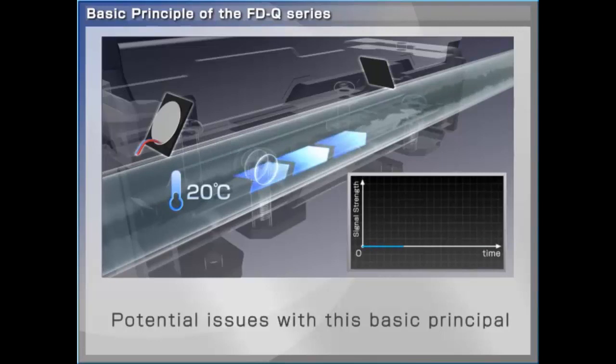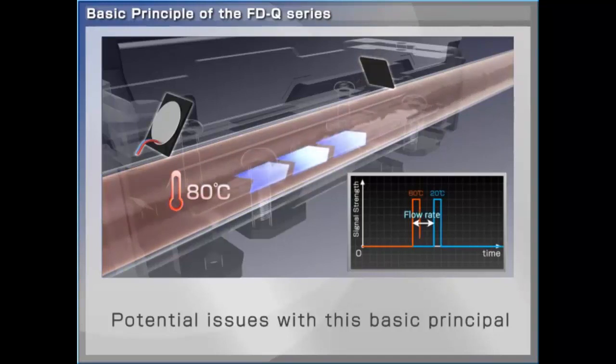If we were to simply send the signal in a single direction, external factors such as temperature variations could cause inconsistent flow readings, even though the flow rate has not changed.